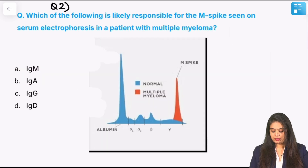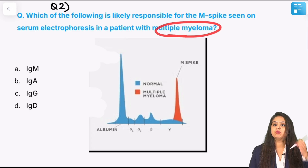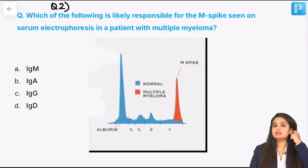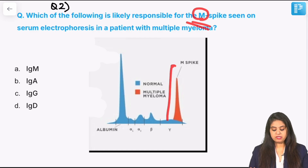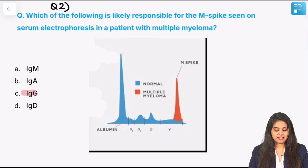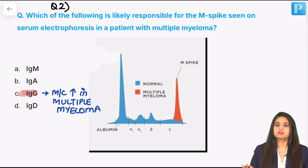Moving on to question 2. You will always get something to do with multiple myeloma in the exam. Here they mention the M spike — M stands for myeloma or monoclonal spike, it does not mean IgM. The most common antibody seen to increase in M spike is actually IgG.